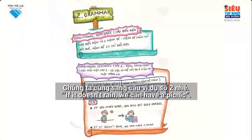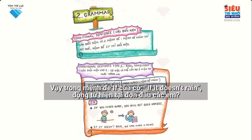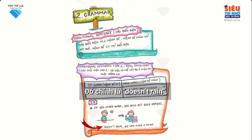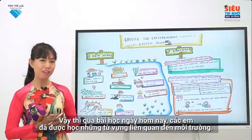We move on to example number two: If it doesn't rain, we can have a picnic. In the if clause 'if it doesn't rain', the verb in simple present is 'doesn't rain'. For the main clause, the modal verb is 'can', going with the verb base form 'have'.